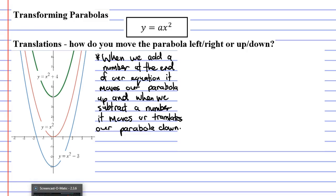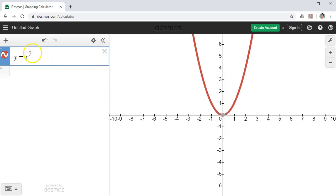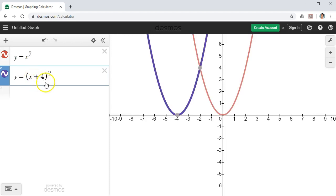So let's look at our sideways movements, our left and right movements now. How are we going to do that? I'm going to take the same equation, and I'm going to put my x in brackets. And I want to see what happens when I add 4 to it. And we can see that when we add 4, it moves our parabola 4 places to the left.